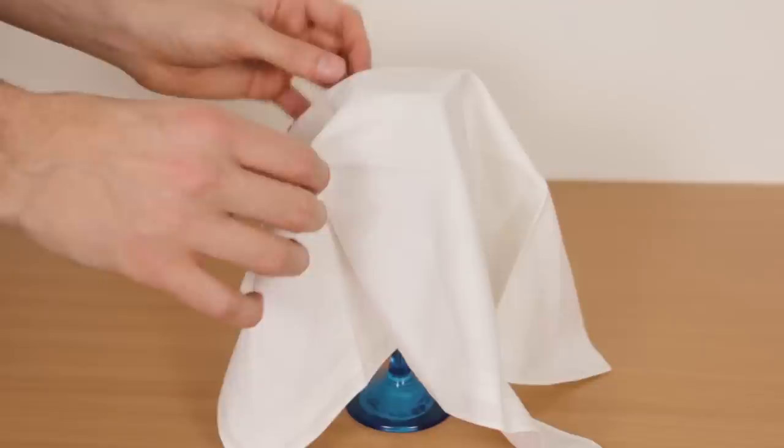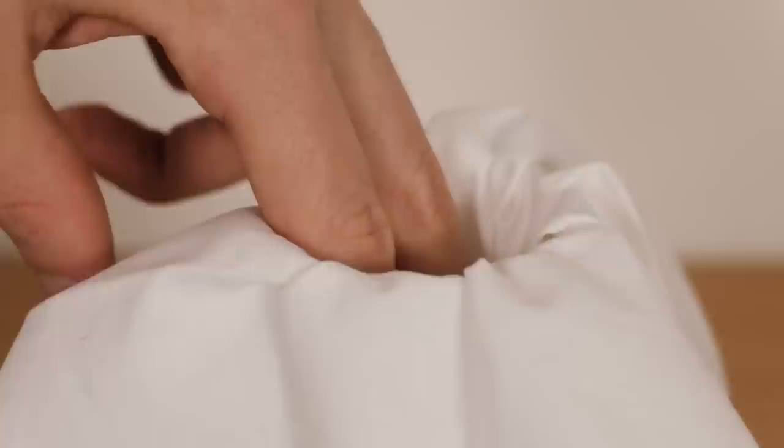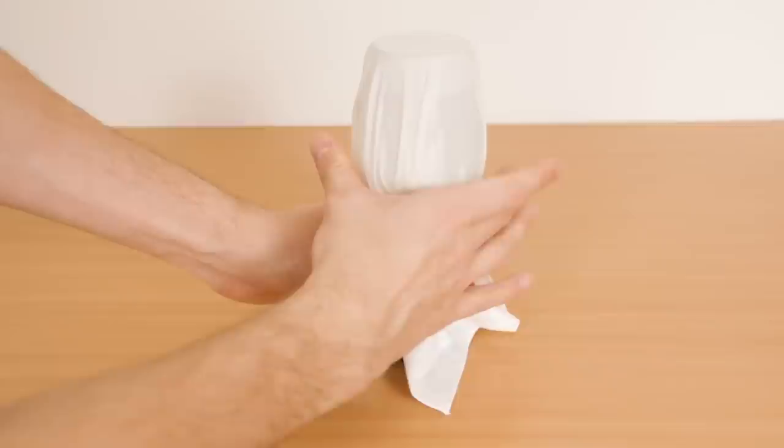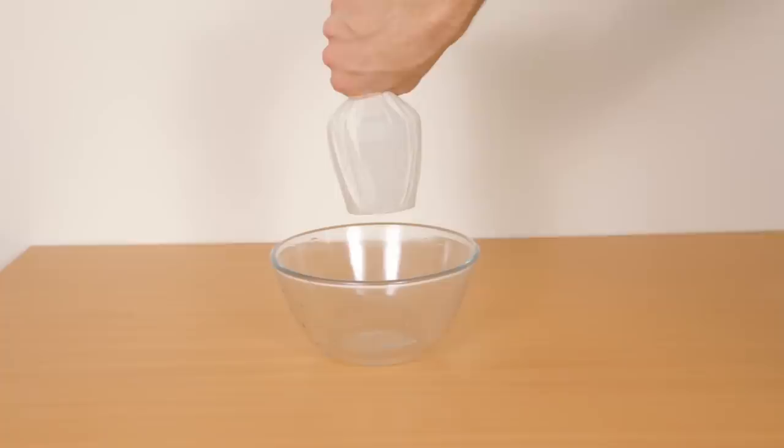Start by draping the handkerchief over the glass, and then push the center of the hanky down into the glass. Fill the glass three-quarters full by pouring water into the middle. Gently pull the sides of the hanky down and grip the ends at the bottom of the glass, stretching it across the glass's surface. Flip the glass over the bowl as there may be a few drops of water. Gently pull the flaps down, and look! The water doesn't flow into the bowl.